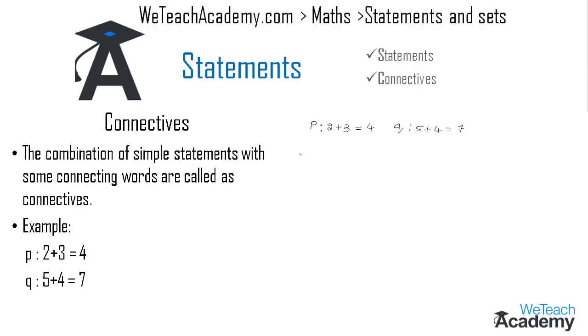We can write: '2 plus 3 is equal to 4 AND 5 plus 4 is equal to 7', and this can be represented symbolically as p AND q.